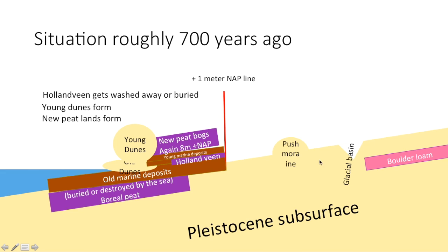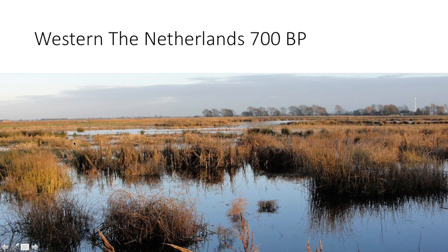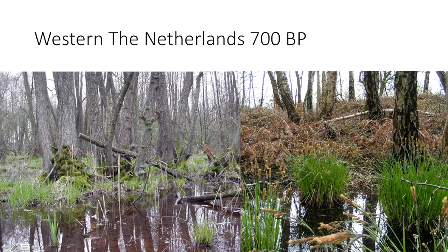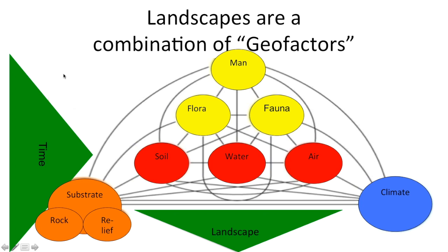On the surface here it's buried deep in the ground there. This is the situation roughly 700 years ago — the Holland Veen gets washed away or buried, young dunes form, and new peatlands form. If I opened my window in Enkhuizen today and looked out at what it looked like 700 years BP, I would see a lot of stagnant water with peat bogs everywhere and maybe one or two swamp forests around. I wouldn't recognize it as Enkhuizen.